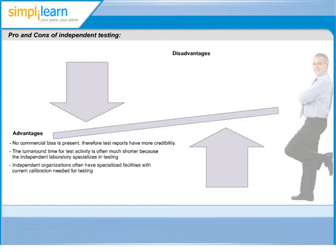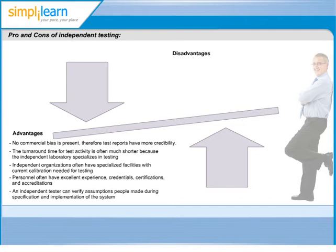Also, independent test organisations will have specialised facilities or tools like accelerators and other automation tools set up that will increase the productivity of the test cycles. An independent tester will test the application with a clear understanding of each requirement without any assumptions. Testing at a third party or other organisation will also ensure that the software is working as intended, even outside of the developed environment.